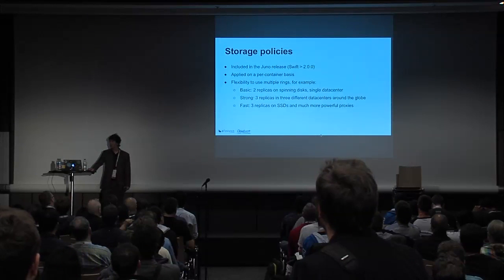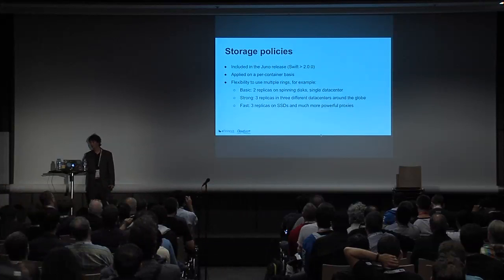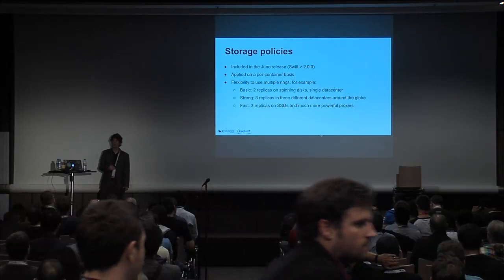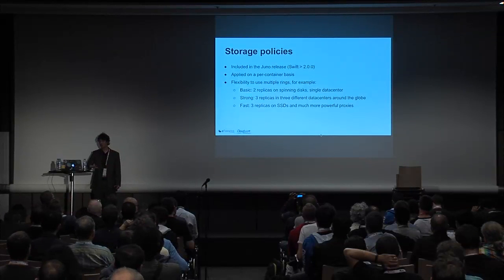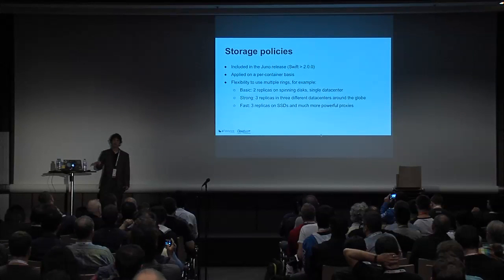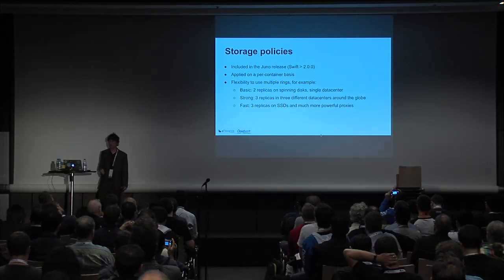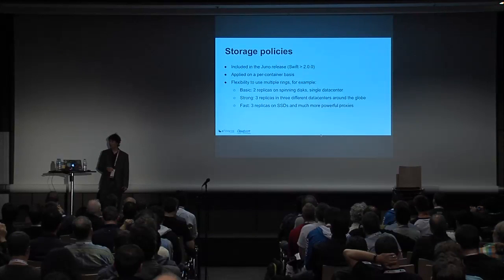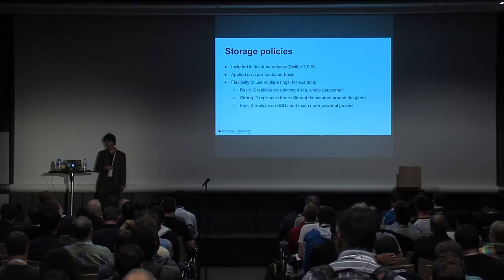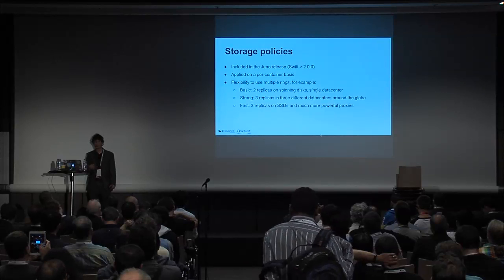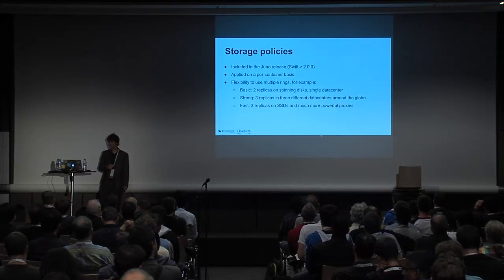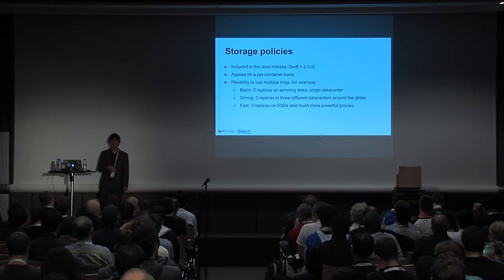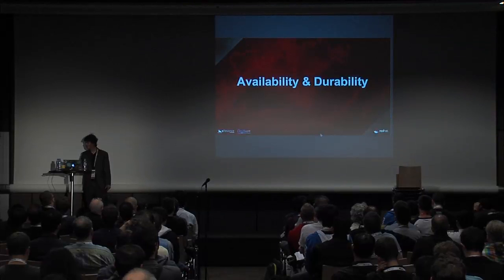There is a new feature in Swift that landed in Swift 2.0 called storage policies. It allows operators to let users choose between different storage strategies using several sets of ring files — one set per strategy. For instance, you can have a basic policy with two copies on spinning disks in a single data center, a strong policy with three copies in three different data centers, or a fast policy where all data is stored on SSD devices.